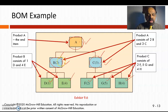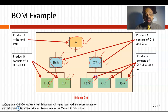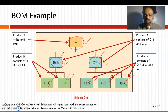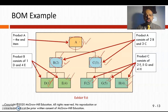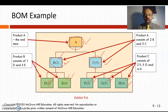In this BOM example, unit A consists of two B's and three C's. Each B contains one D and four E's. Each C contains two F's, five G's, and four H's. When given an MRP problem, you need to read it carefully and construct this bill of materials structure correctly.